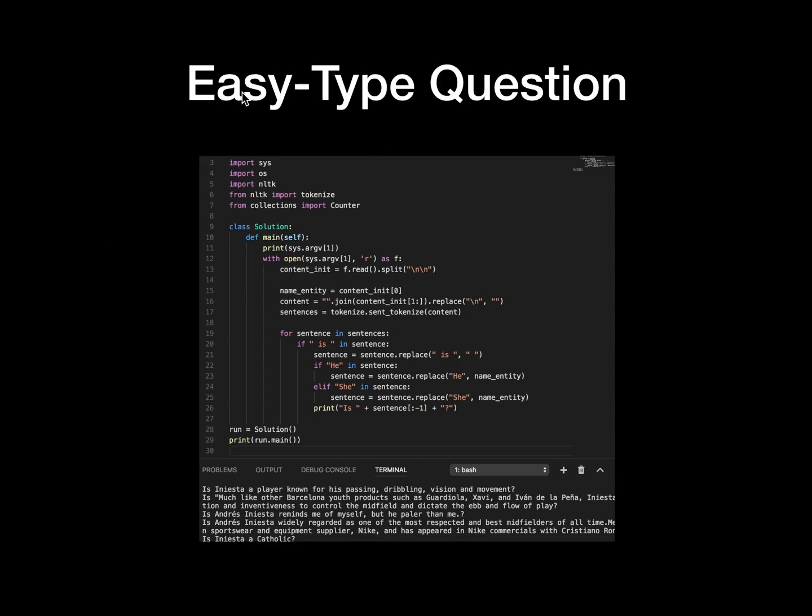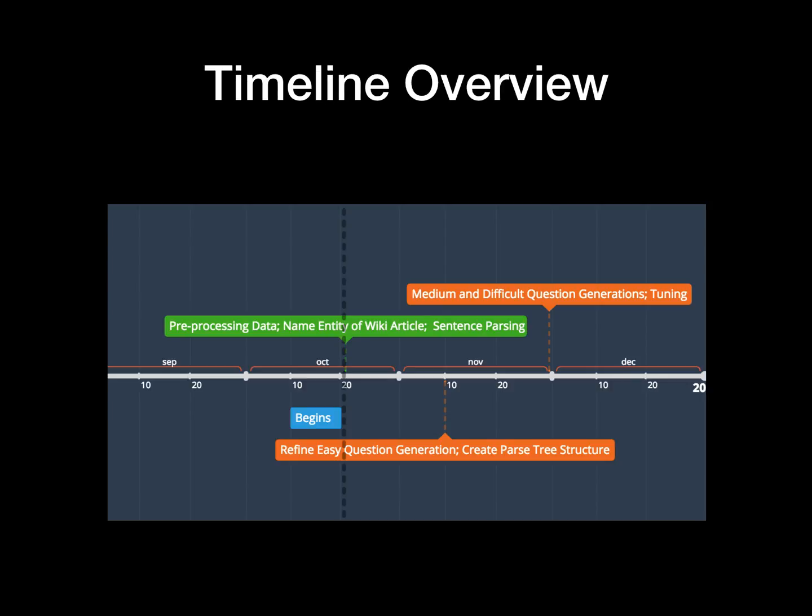Our program is able to generate easy type questions as you can see here. We have used NLTK to tokenize a string of text into sentences and did some replacement with the changing line symbols. We also recognized the name entity and replaced pronouns with it. This is a really simple type of question, but it's somewhere to get our project getting started. As the timeline goes, we began several days ago.